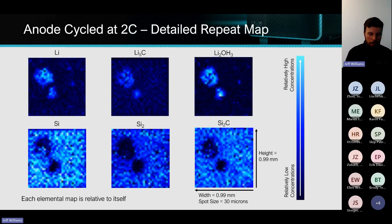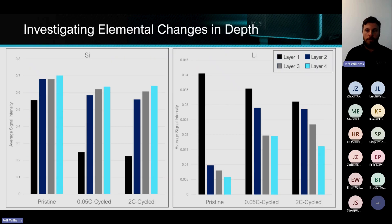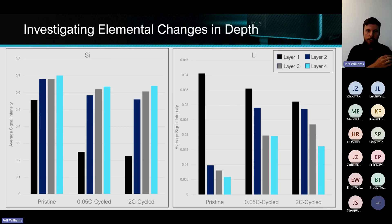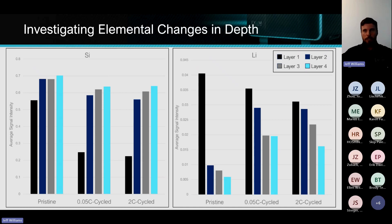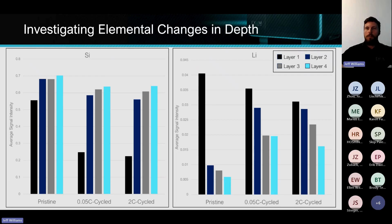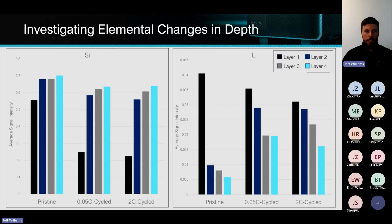Now let's average that whole raster and look at it as a bar graph. I integrated that whole map and I'm looking at silicon and lithium, then went down through multiple layers — layer one, layer two, layer three, layer four — four rasters of the exact same size.